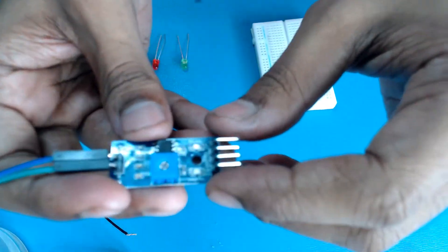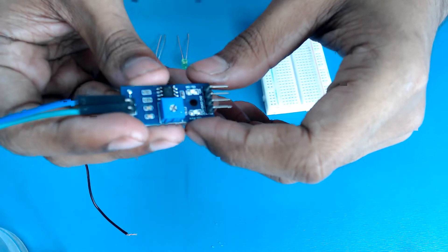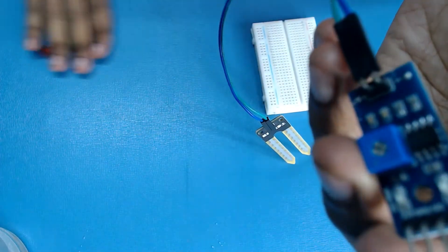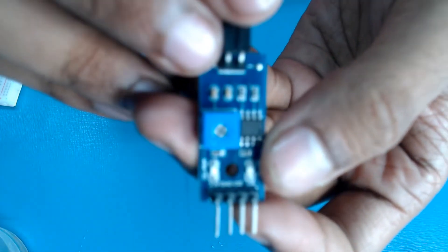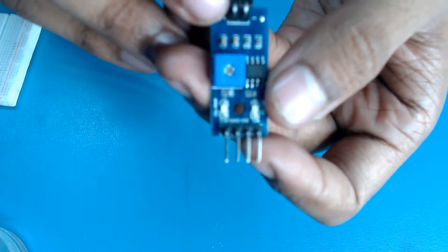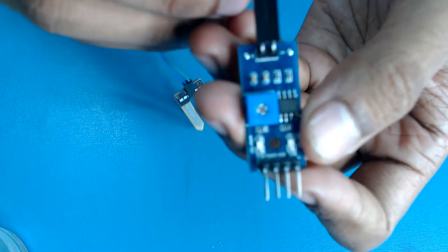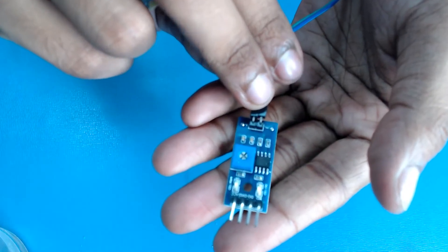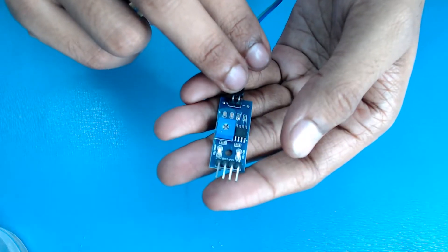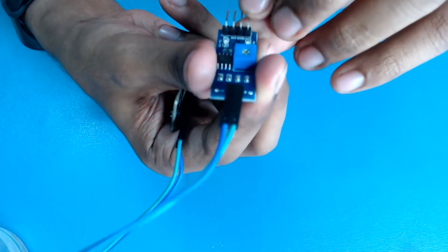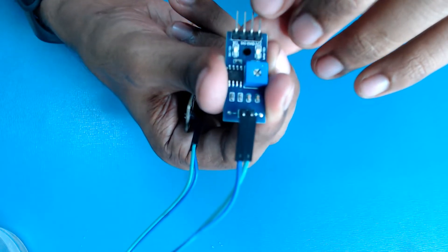Now let's see the output pins. If you look carefully, it has four pins, in which two are power pins - VCC and ground.